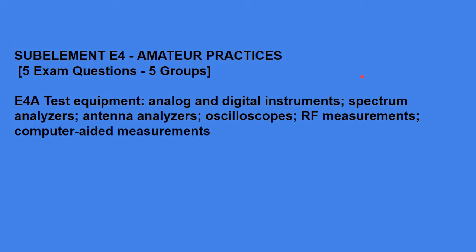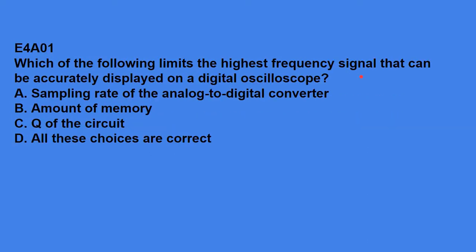Sub-element E4, moving along to amateur practices. Five exam questions come from the five groups. First off, E4A, test equipment. Analog and digital instruments. Spectrum analyzers. Antenna analyzers. Oscilloscopes. RF measurements. Computer-aided measurements. E4A01, which of the following limits the highest frequency signal that can be accurately displayed on a digital oscilloscope? The answer is A, the sampling rate of the analog-to-digital converter.